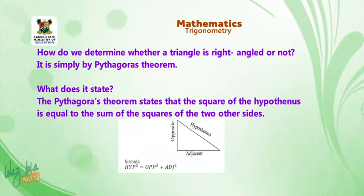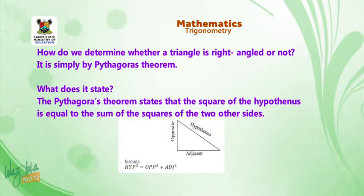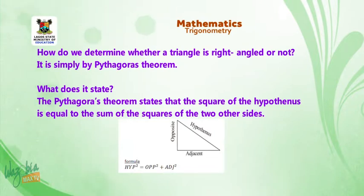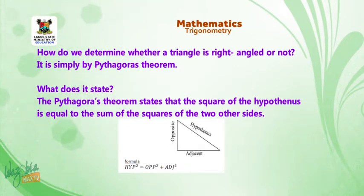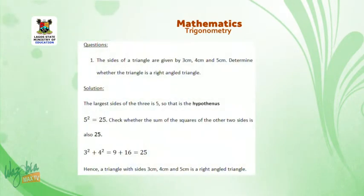How do we determine whether a triangle is a right angle triangle or not? The simple answer is through the Pythagorean theorem. It states that the square of the hypotenuse equals the sum of the squares of the two other sides. In a triangle, the largest side is called the hypotenuse, and the two other sides are opposite and adjacent. So hypotenuse squared equals opposite squared plus adjacent squared.